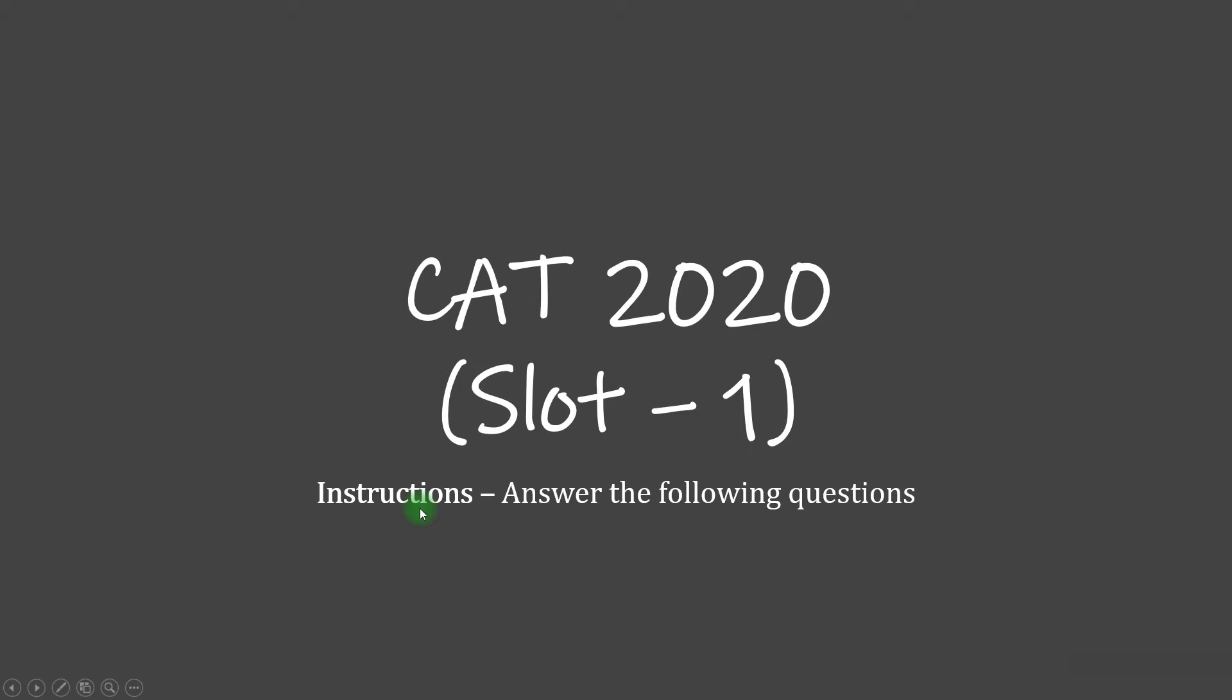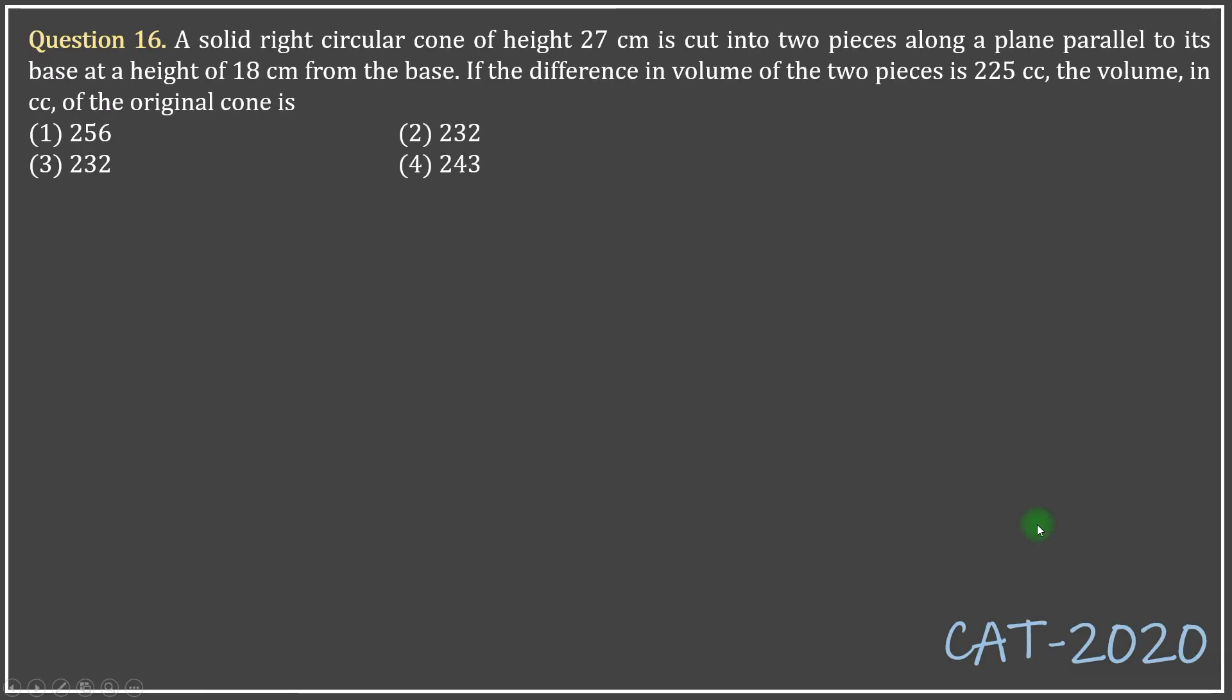So let's get on with the question from CAT 2020 slot 1. A solid right circular cone of height 27 centimeters is cut into two pieces along a plane parallel to its base at a height of 18 centimeters from the base.